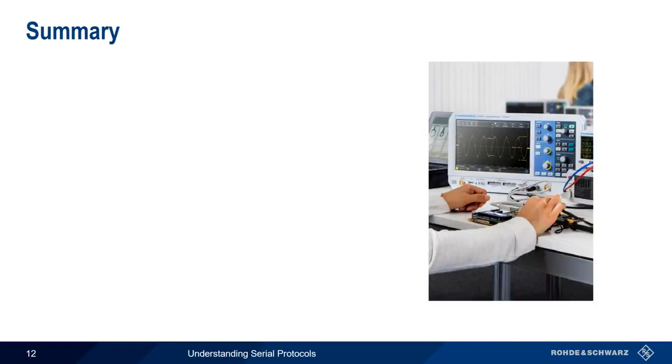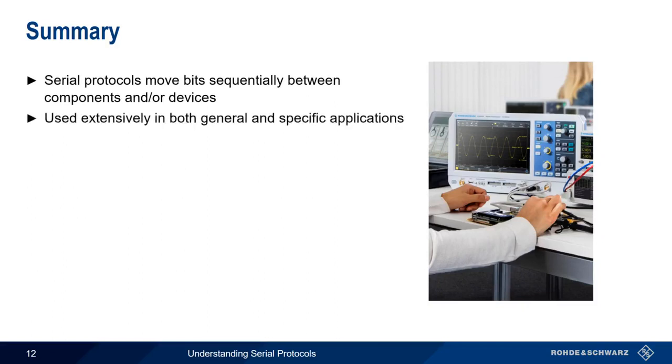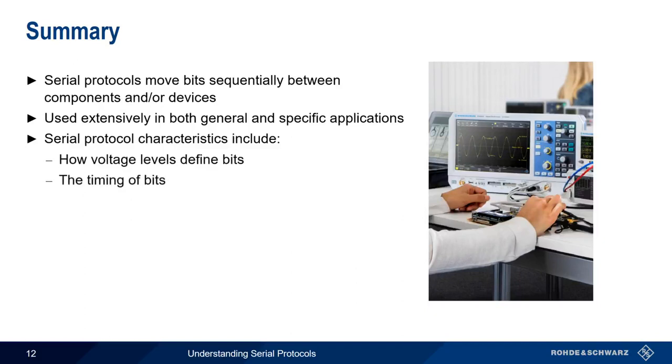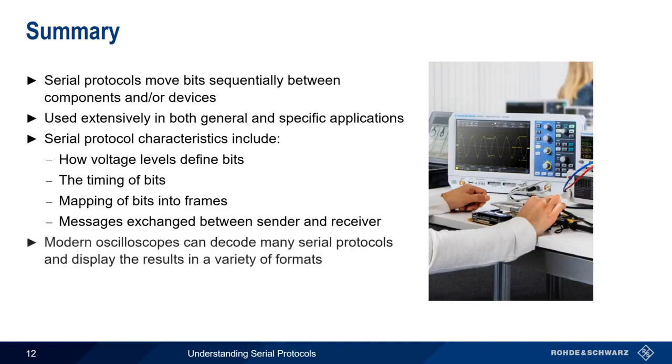So let's summarize what we've learned. Serial protocols are used to move bits sequentially, or one at a time, between components or between separate devices. Serial communications are used in almost everything digital and can be divided into two main categories: generic standards like UART, I2C, and SPI, and more application-specific protocols like CAN, LIN, and FlexRay. All serial protocols have certain characteristics, such as how voltages are mapped into bits, the timing or bit rate, how bits are organized into message units or frames, as well as the types of frames exchanged and the rules for when each type of frame is sent. And although serial protocols have been around for a long time, modern digital oscilloscopes are now the tool of choice for analyzing and decoding serial data.